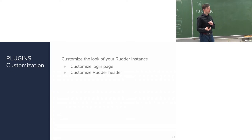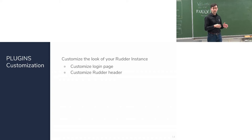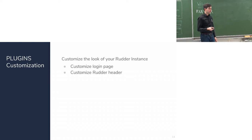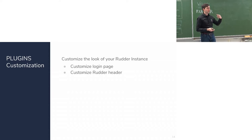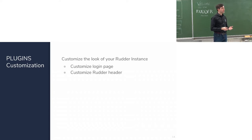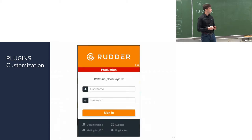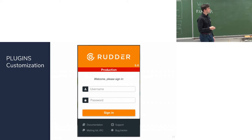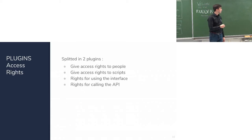Another plugin is the customization plugin. You can customize Rudder's look and feel — specifically the login page and the header. This is mainly intended to help users know which version or environment of Rudder they are using. For example, if you have a development environment and a production environment, you can differentiate them at first glance, so you immediately know where you are.